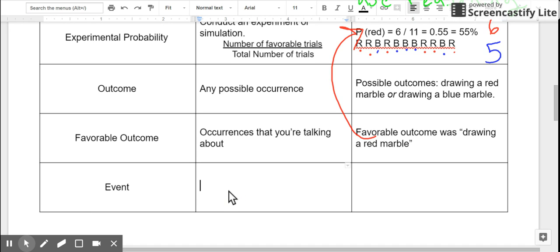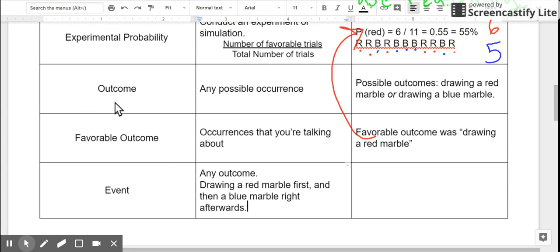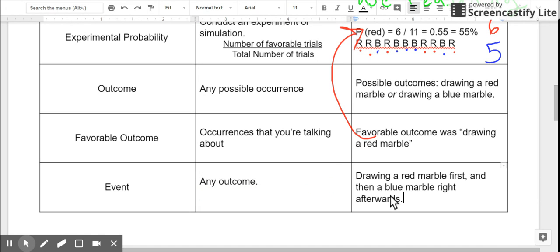An event describes any outcome, but sometimes an event describes more than one outcome at the same time. So the event might be drawing a red marble first and then a blue marble right afterwards. So an outcome is any possible occurrence in the situation. But when I talk about an event, I might be talking about more than one outcome followed by other subsequent outcomes. So I guess technically this would be our example: drawing a red marble first and then a blue marble right afterwards. And I'll add in that it's any outcome, but it can be more complicated.